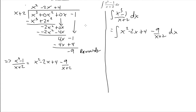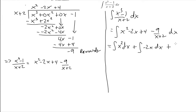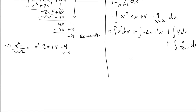You might think this makes things more complicated, but it doesn't. Using our integration rules, we can split this big integral into four separate ones: the integral of x² dx, plus the integral of -2x dx, plus the integral of 4 dx, plus the integral of -9/(x + 2) dx. So I'll go ahead and do that.